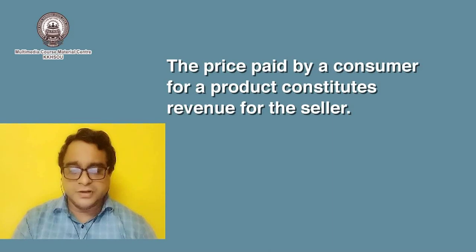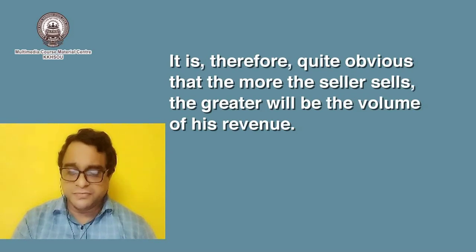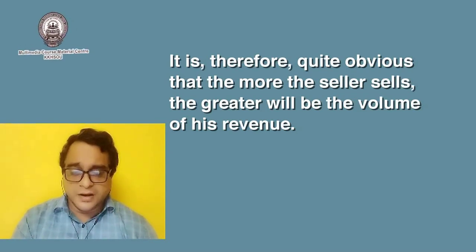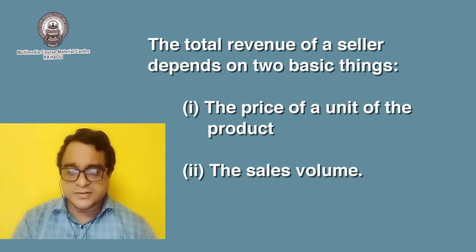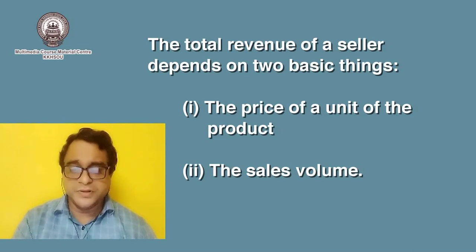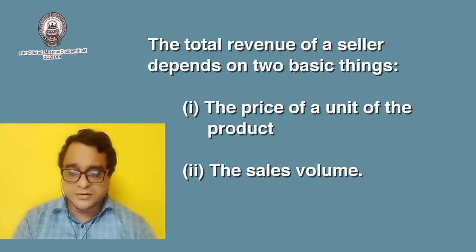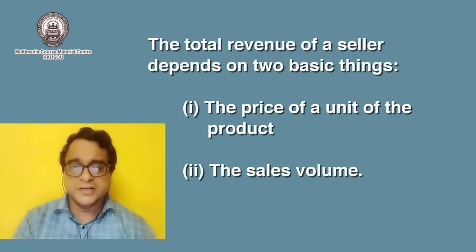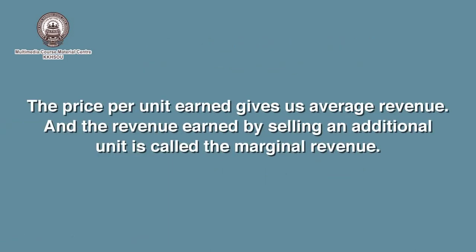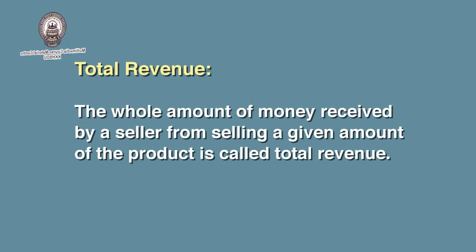The price paid by a consumer for a product constitutes revenue for the seller. It is therefore quite obvious that the more the seller sells, the greater will be the volume of his revenue. The total revenue of a seller depends on two basic things: first, the price of a unit of the product, and second, the sales volume. The price per unit earned gives us average revenue, and the revenue earned by selling an additional unit is called the marginal revenue. The whole amount of money received by a seller from selling a given amount of the product is called total revenue.